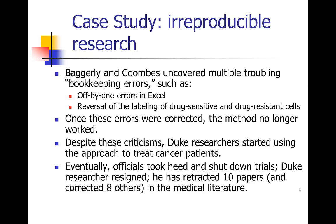Baggerly and Coombs tried to get somebody to listen. They finally got a paper published on the whole subject in the Annals of Applied Statistics, and that got some people interested. But it was still hard to get people to pay attention. What finally broke the story was that somebody identified that the main researcher at Duke had lied on his CV about being a Rhodes Scholar.